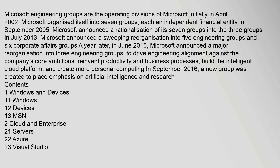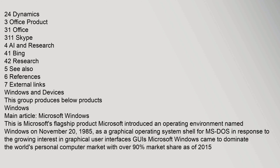In September 2016, a new group was created to place emphasis on artificial intelligence and research. The main divisions include: Windows and Devices, Cloud and Enterprise, Office products, AI and Research, and related corporate functions.